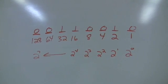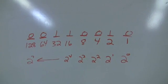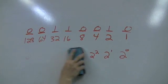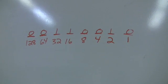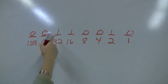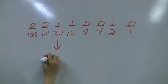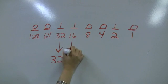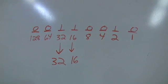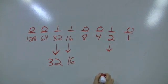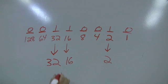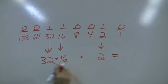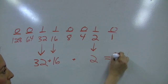Now I want to know what the decimal equivalent of this number is. So all I have to do — I'm going to clear this away so we have room to work — is anywhere where there is a 1, I bring down that number. So I have a 1 under 32, so I bring down 32. I have a 1 under 16, so I bring down 16. And I have a 1 under 2, so I bring down 2. Then all I need to do is add these numbers together, and the result is 50.